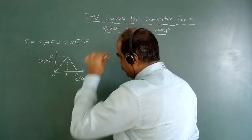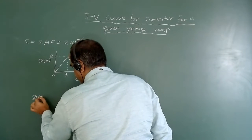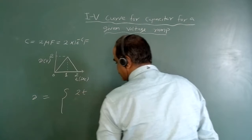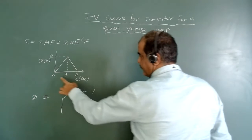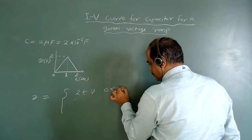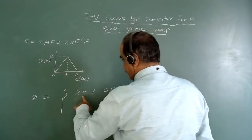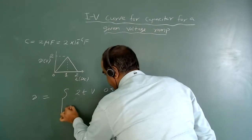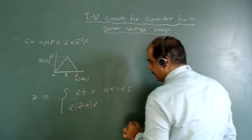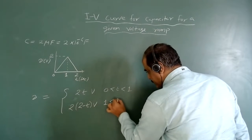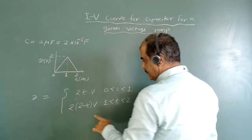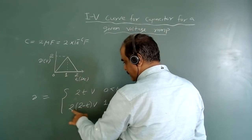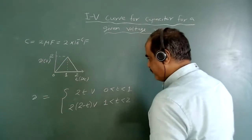First I will write the voltage equation. Since voltage is increasing, I can write v equals 2t volts for the time interval zero to one second. When t equals zero, voltage is zero; when t equals one, voltage is two volts. For the second interval, v equals 2 minus t volts, for t from one second to two seconds. If I put t equals two, voltage is zero; if t equals one, voltage is two volts. So these equations satisfy the voltage waveform.